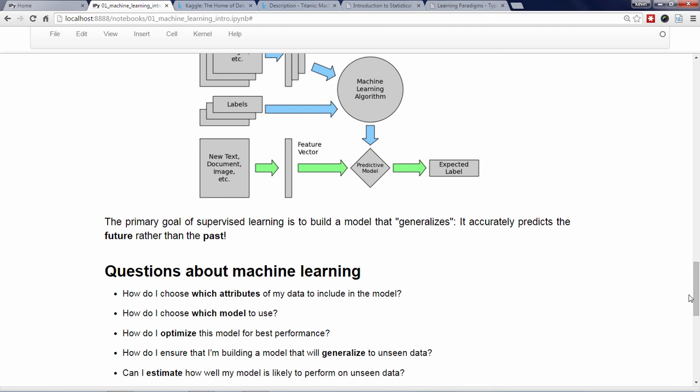This simplified description of machine learning might raise some questions in your mind, such as: How do I choose which attributes of my data to include in the model? How do I choose which model to use? How do I optimize this model for best performance? How do I ensure that I'm building a model that will generalize to unseen data? Can I estimate how well my model is likely to perform on unseen data? These are excellent questions and hint at the complexity of doing effective machine learning. All of these issues will be addressed later in the video series.